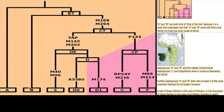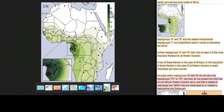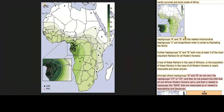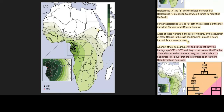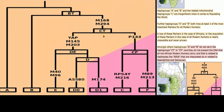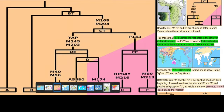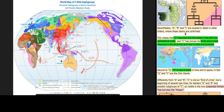A and B are both kind of end-of-the-line because it is a clear and undeniable fact that A and B never left Africa and hardly survived and exist inside of Africa. Haplogroups A and B and the related mitochondrial haplogroups L are insignificant when it comes to populating the world. Further, haplogroups A and B both miss at least three of the most important markers for all modern humans. A loss of these markers in the case of Africans, or the acquisition of these markers in the case of all modern humans, is nearly impossible and never proven. Amongst others, haplogroups A and B do not carry the haplogroups CT or CF, and they do not present the DNA that all non-African modern humans carry — related to haplotypes like B006 that are interpreted as or related to Neanderthal and Denisovan. Nevertheless, A, B and L are studied in detail in other videos where these claims are confirmed.